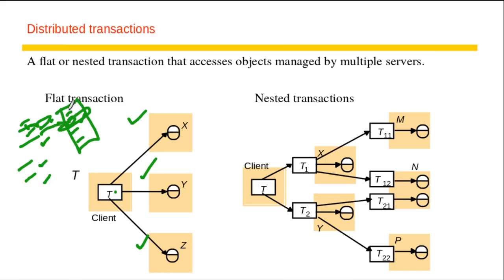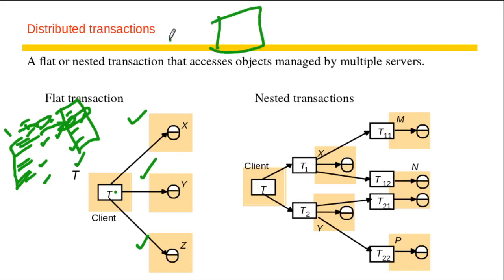A transaction involves a set of operations to be performed — maybe on different parts of the database, maybe on different tables. Now we are thinking about the same thing, but in a distributed environment. Earlier we had a centralized server, and whatever a client had to interact with, it interacted with that centralized server. The whole database and all data was on this centralized server, so all operations of the transaction were executing on this one centralized server.